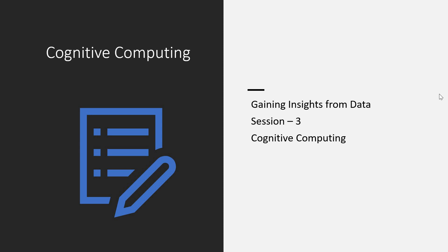Hello friends, welcome back. I hope you have been enjoying this series on cognitive computing. In the last session we understood what can make a system cognitive and I explained the features and basic attributes required for a system to become cognitive. I also gave you instances where cognitive computing can really be helpful in building applications better. In this session we are going to gain knowledge on how we gain insights from data and why gaining insights from data is important and how it is connected to cognitive computing.